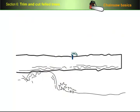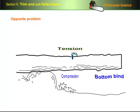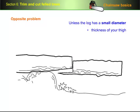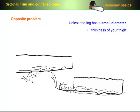Now let's look at a log that has the opposite problem in terms of its internal stresses. Because the log is hanging over the edge of its support, the bottom is now under compression and the top is in tension. This log therefore has a bottom bind, so unless the log has a small diameter, say up to the thickness of your thigh, you can't simply cut straight down or you'll risk tearing the grain on the bottom of the log as it starts to give way.